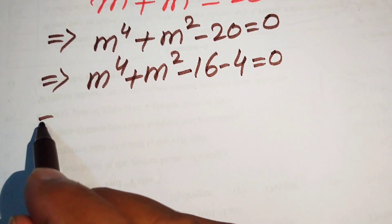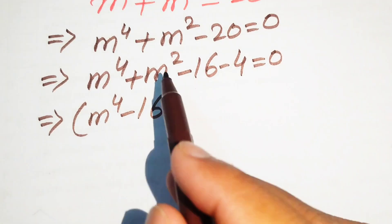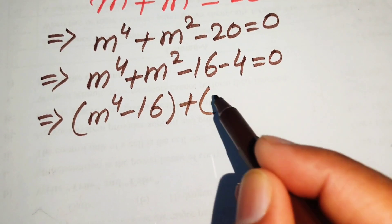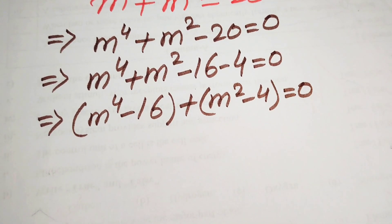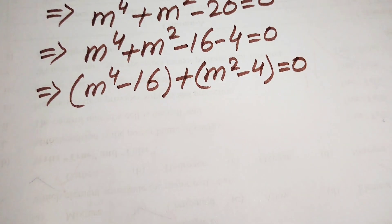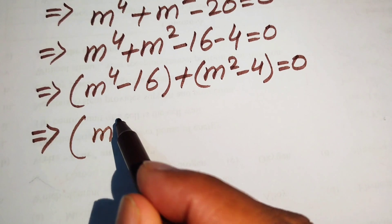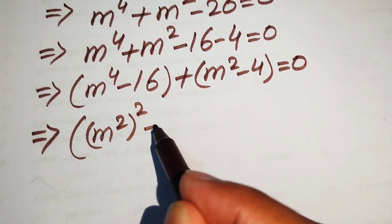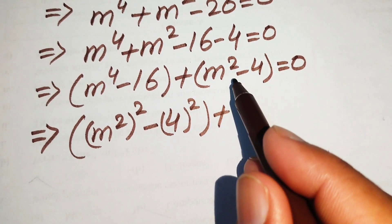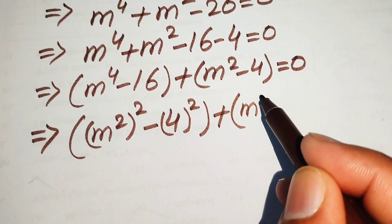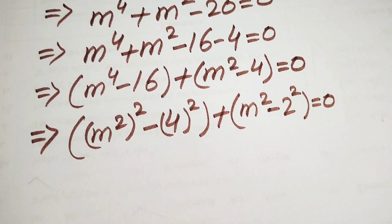In the next step we make a pair of m squared with minus 4, written as m squared minus 4, and the whole equation equals 0. We then rewrite: m to the power of 4 is written as m squared whole squared, 16 is written as 4 squared, and we write the 4 term as 2 squared, so the whole equation equals 0.